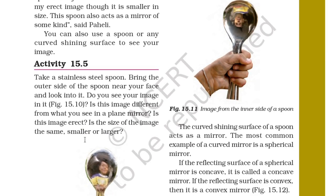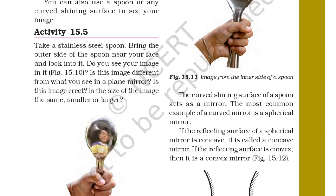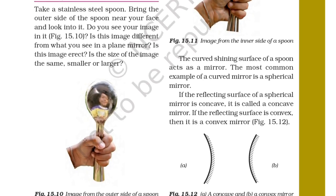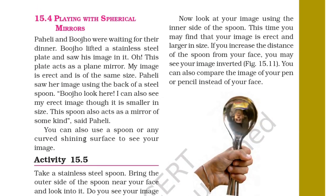In Activity 15.5, take a stainless steel spoon. Bring the outer side of the spoon near your face and look into it. Do you see your image? Is it different from what you see in a plain mirror? Is the image erect? Is the size the same, smaller or larger? Now look at your image using the inner side of the spoon. This time you may find that your image is erect and larger in size. If you increase the distance of the spoon from your face, you may see the image inverted.